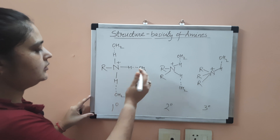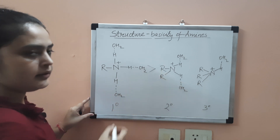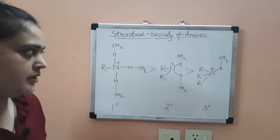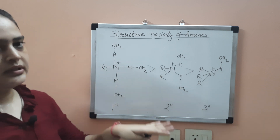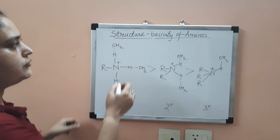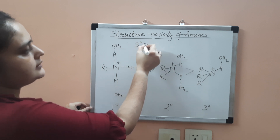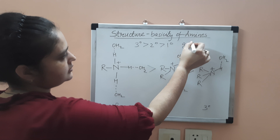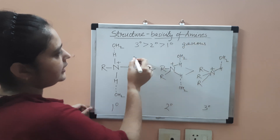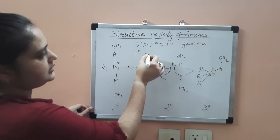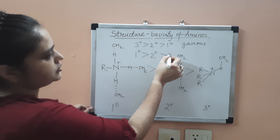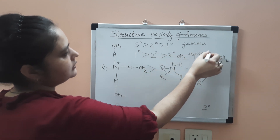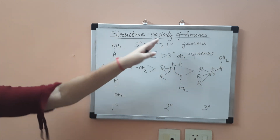So the primary amine will be more basic, then secondary amine, then tertiary amine — the order is reversed in the aqueous phase. In the gaseous phase it was tertiary > secondary > primary, but in the aqueous phase it is primary > secondary > tertiary. This is the order of basicity of amines in aqueous phase.